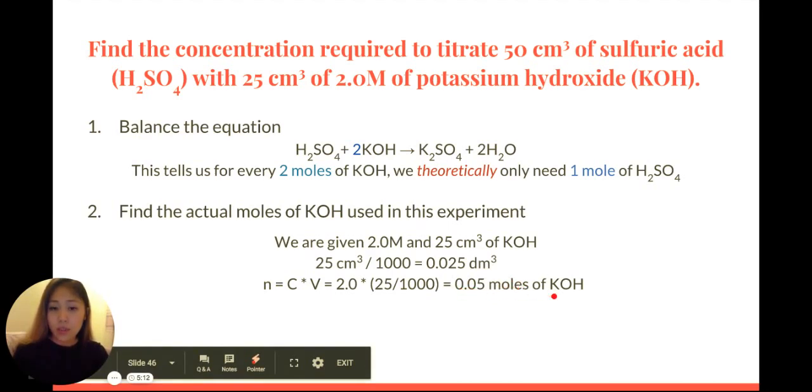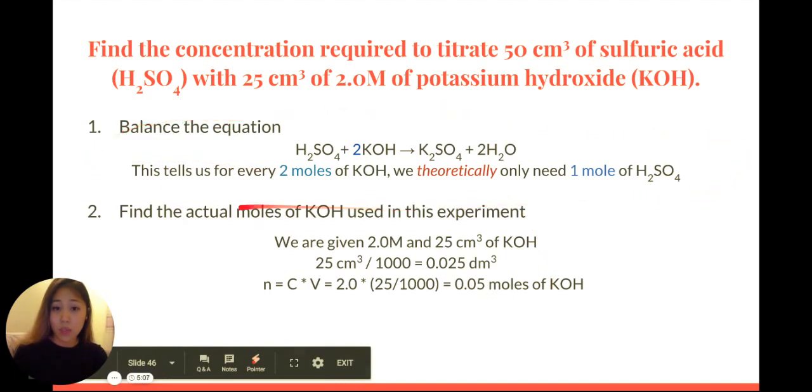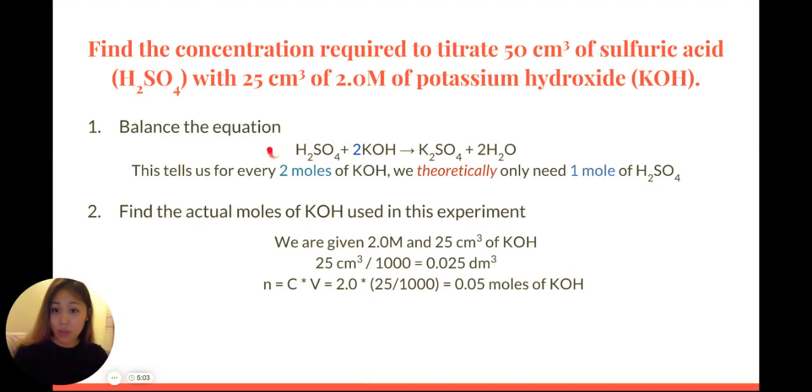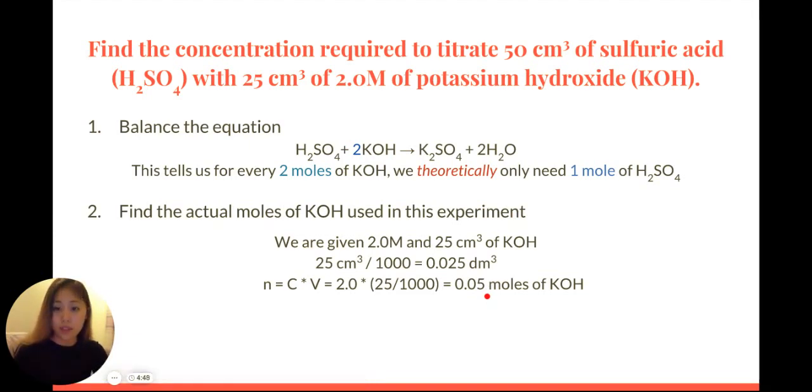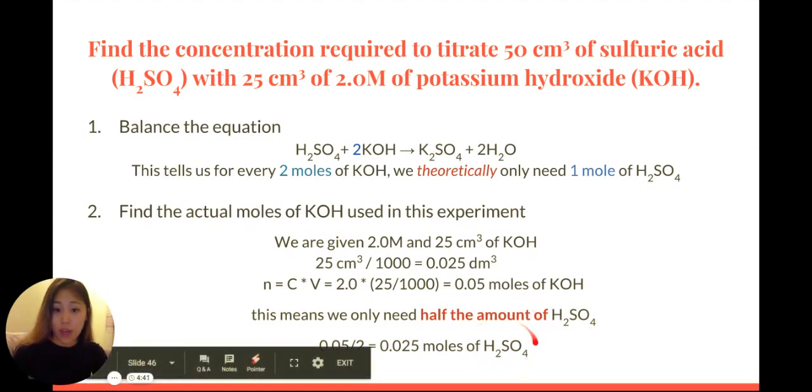In this case, we see that, again, looking at this equation—that's where this balanced equation comes in handy—it tells us we only need half the amount of moles for sulfuric acid. We don't need the same amount as potassium hydroxide. So this means that if, in our experiment, we use 0.05 moles of potassium hydroxide, then we only need half of that for our sulfuric acid. So we divide this by 2, and we get 0.025 moles of sulfuric acid.